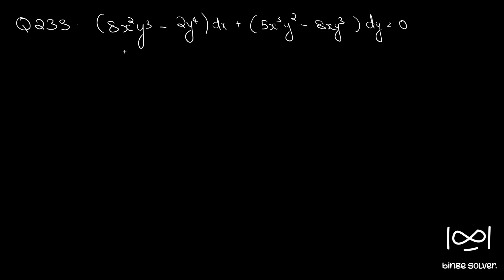Question number 233. The differential equation is: 8x²y³ minus 2y⁴ dx plus 5x³y² minus 8xy³ dy equal to 0. This is the last question from this section. We will be taking up linear differential equations from the next video onwards. With this video we conclude the section which dealt with exact equations.